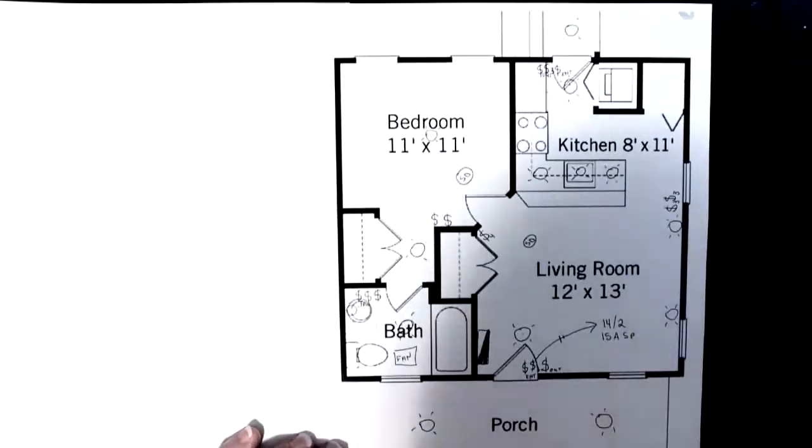Now, rule of thumb is that we only put 12 lights, or combination of lights and smoke detectors, fans, things like that, on one circuit. Nowadays, with LEDs, there are some exceptions, but I don't know whether they're going to use incandescent bulbs in these lights, or LED lights. So I'm going with a maximum of 12 on these circuits.